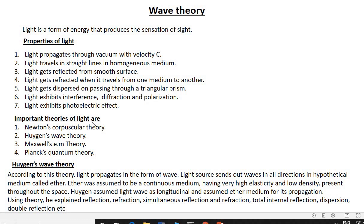There are various theories of light. The first is Newton's corpuscular theory, then Huygens' wave theory, Maxwell's electromagnetic theory, and Planck's quantum theory. Today we are going to study Huygens' wave theory.